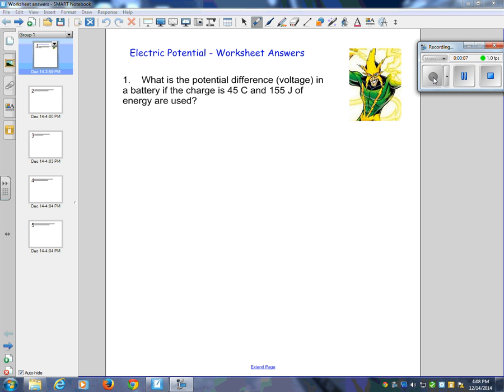Okay, so we're going to have a quick look here at question number 1. Remember our solving rules. Once again, we're going to follow those. Question 1 says: what is the potential difference or voltage in a battery if the charge is 45 coulombs and 155 joules of energy are used?